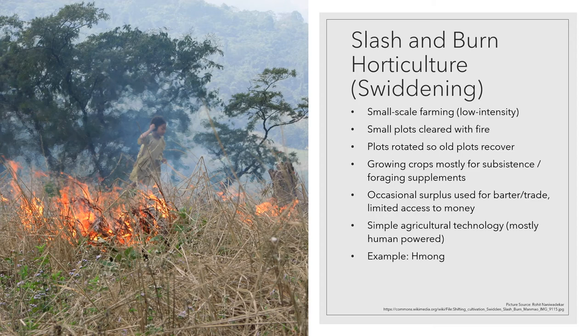Most societies that do swiddening are growing crops mostly for their own subsistence — not tons of crops to sell at the market, mostly to eat and maybe share among neighbors. Occasionally there are surpluses and those surpluses are traded for goods or money to some extent. The agricultural technologies tend to be relatively simple — digging sticks, human-powered technologies, so if you've got a plow it's people that are pulling it. A key example of this are the Hmong from Southeast Asia — Cambodia, Laos, and Vietnam.